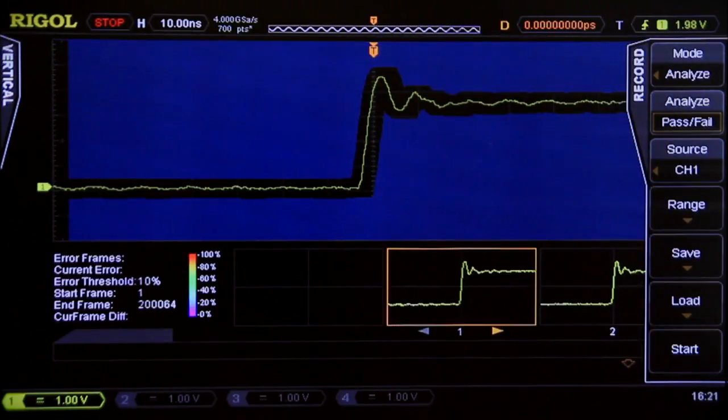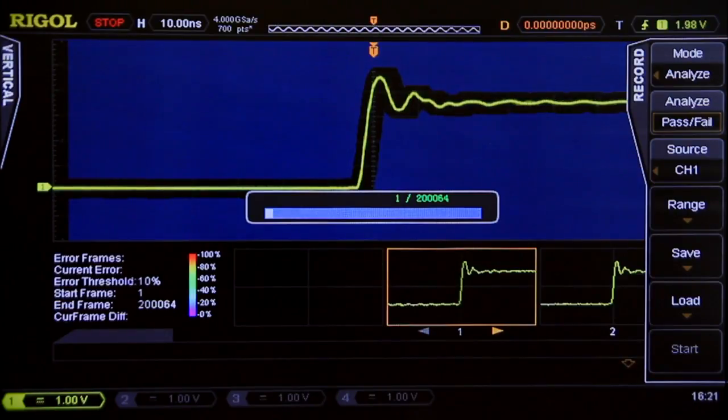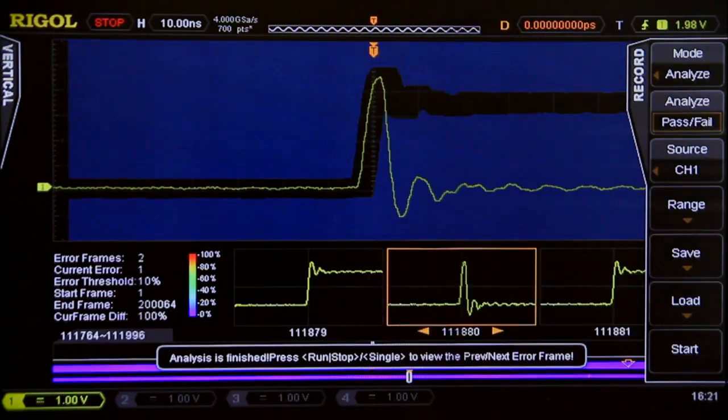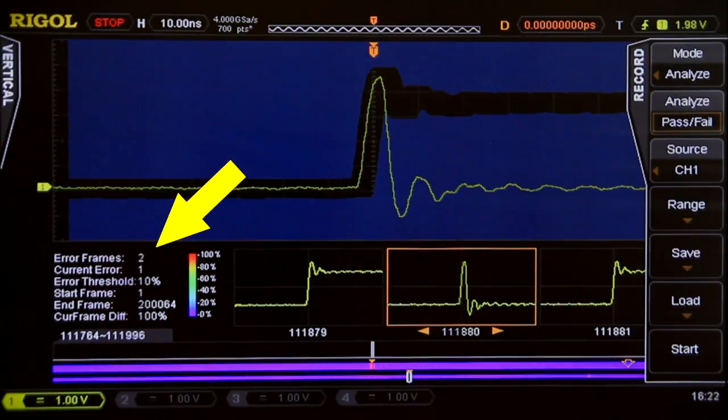Now, we can analyze this and use a pass-fail mask, and now we analyze each frame to see whether it fits inside the mask. So we can see a total of two error frames. So that means of the 200,000 transitions, we only found two errors.